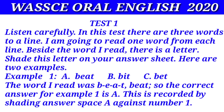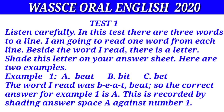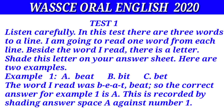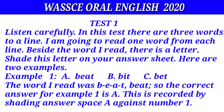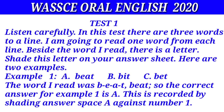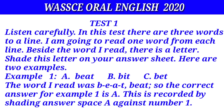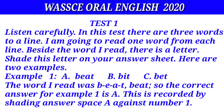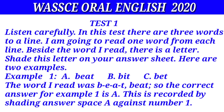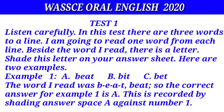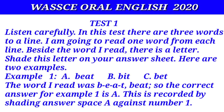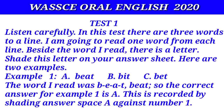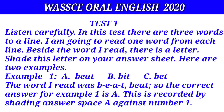Test one. Listen carefully. In this test there are three words to a line. I'm going to read one word from each line. Beside the word I read there is a letter. Shade this letter on your answer sheet. Here are two examples. Example one: beat. The word I read was B-E-A-T, beat. So the correct answer for example one is A. This is recorded by shading answer space A against number one.